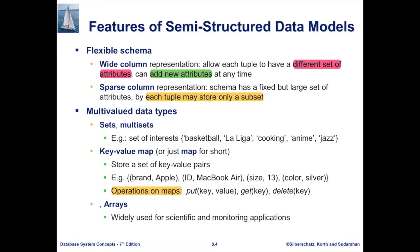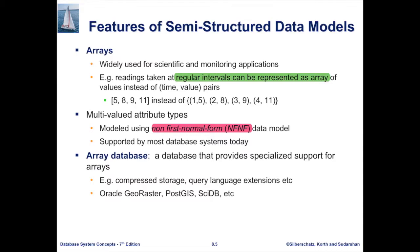There is also a type of semi-structured data model called array. When the type is an array, it's a sequence of either integers or real numbers. This type of data is mostly used for scientific and monitoring applications. Instead of having an array with key-value pairs like a timestamp and value, the array is just a sequence — because these arrays are often obtained by IoT devices with pre-programmed intervals for getting measurements.